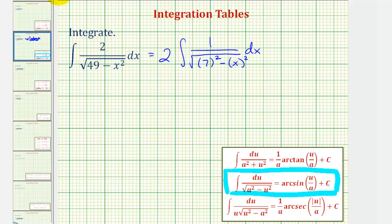Looking at the integration formula, notice how this tells us that a is equal to seven and u is equal to x. And since u equals x, notice that du equals dx, which tells us that u substitution is not required.